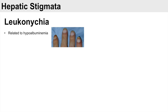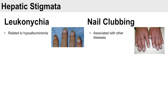Another stigmata is nail clubbing. In nail clubbing, you can see a change in the angle of the nail. Nail clubbing seems to be related to hypoxemia; it is typically a sign of respiratory problems, but you can also see it in liver diseases as well.